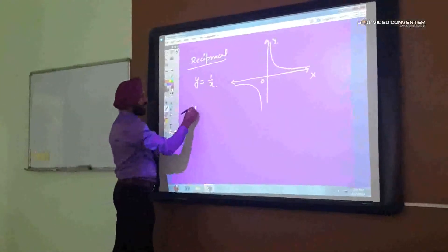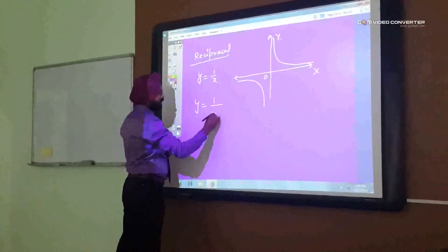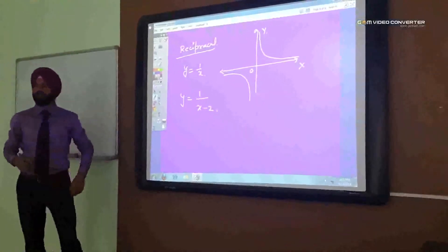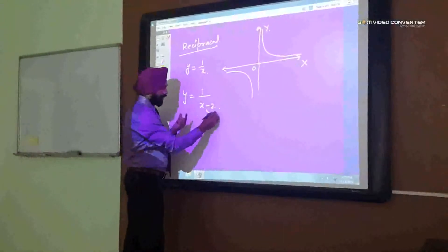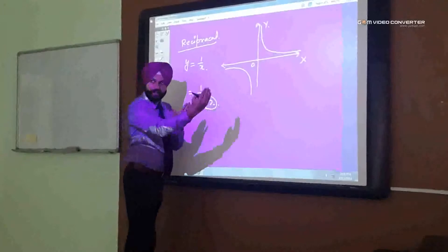So, if you change the curve like this. Y is equal to 1 upon x minus 2. So, what will happen? 2 units on right side.